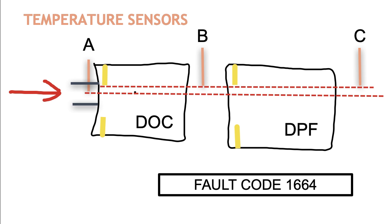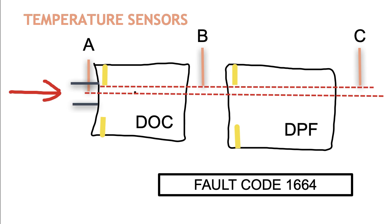So when that goes on, the ECM will log fault code 1664, and that means that the DOC is missing when in fact it might just be sooted up. Now, what do we do about that? Well, the first thing you do is you pull down the DOC and DPF, take them apart and you look to see if in fact you do have that thick soot ring.